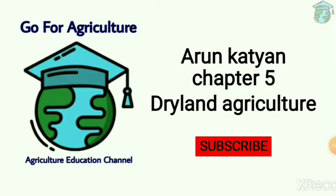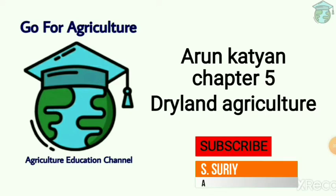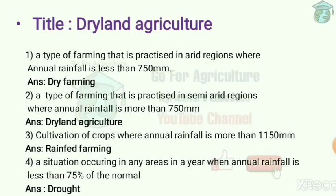Welcome to the Go For Agriculture channel. Today we are going to discuss Arun Kadhyan chapter 5 - Dry Land Agriculture. First question: a type of farming practiced in arid regions where annual rainfall is less than 750 mm is called dry farming. Dry farming is generally practiced in arid regions.